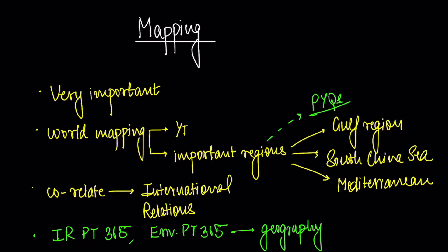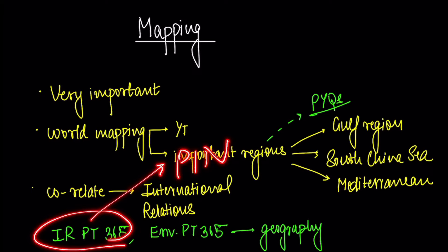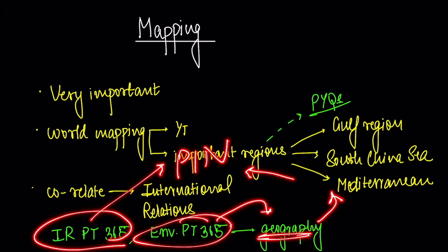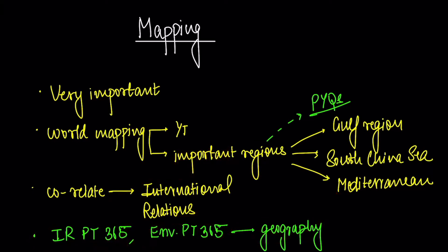Now if you don't want to wait for me to do it on YouTube or you don't want to see lectures, there is a beautiful way you can do it. You relate it with international relations. When IR PT365 is released, at the end there is a topic called places in news. When environment PT365 is released, in that geography section there will be places in news. And combining both, you will be able to cover most of the places in news. You'll be done.